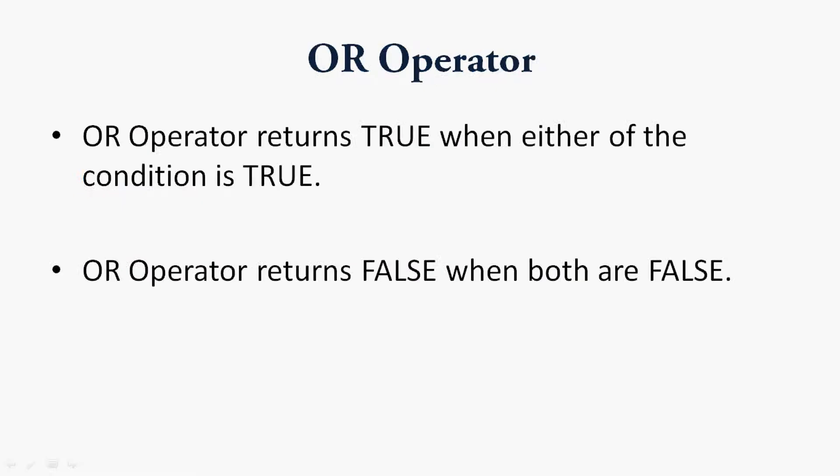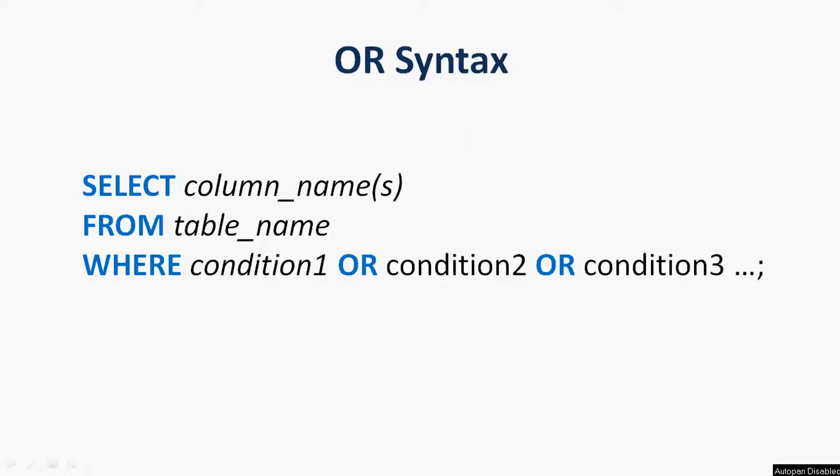The OR operator returns true whenever any one of the conditions is true, and returns false whenever both conditions are false. The syntax is: SELECT column names FROM table name WHERE condition one OR condition two OR condition three, up to as many conditions as required.